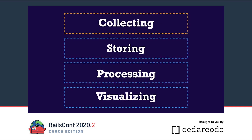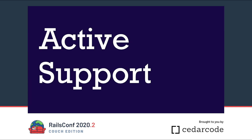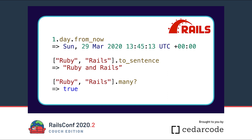This talk is divided into four chapters. In our first chapter we will start collecting data with the help of Active Support. After that we will continue with storing, processing, and visualizing our collected data. Active Support is a utility framework of Ruby on Rails. The more popular features of Active Support are the Ruby core extensions — some examples are the date and array extensions like from now, to sentence, or many.